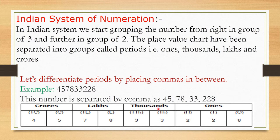The thousands period consists of 2 places: 1,000s and 10,000s. The lakhs period consists of 2 places: lakhs and 10 lakhs. The crores period consists of 2 places: crores and 10 crores.